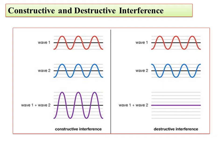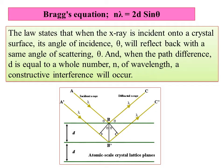When waves move in opposite directions, the magnitude and amplitude decrease — this is Destructive Interference. Again, depending upon what type of interference is taking place with a wave, Bragg's equation is possible only in the case of Constructive Interference.